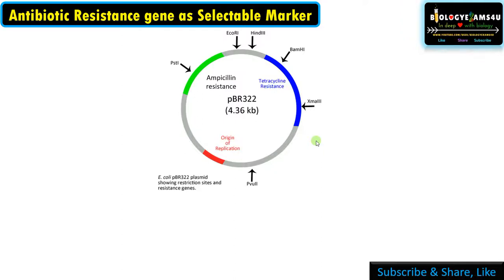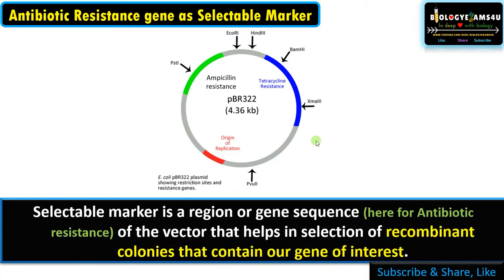Hi friends, hope you're fine. In this video we'll be discussing how antibiotic resistant gene works as a selectable marker in the selection of recombinant colonies within five minutes. A selectable marker is a region or gene sequence — here it is the antibiotic resistance gene of the vector — that helps in the selection of recombinant colonies that contain our gene of interest.